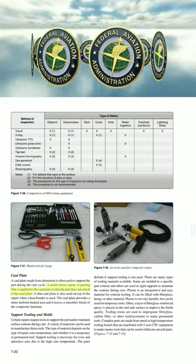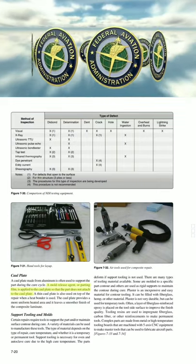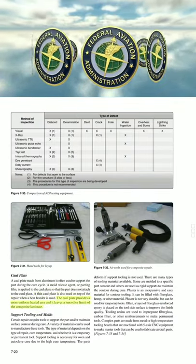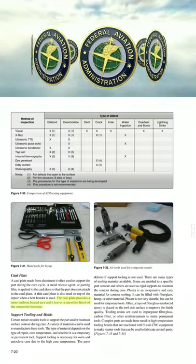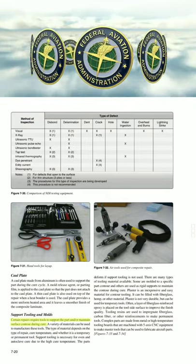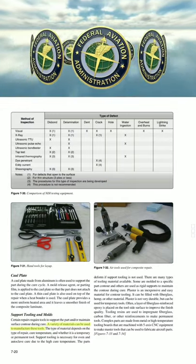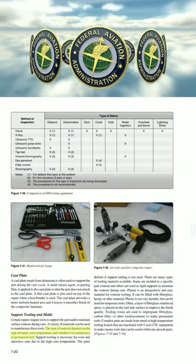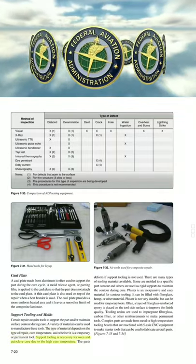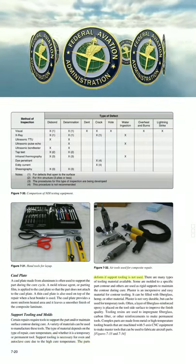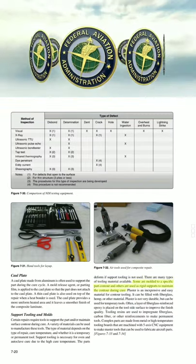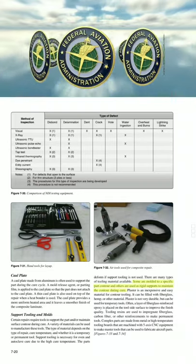A parting film is applied to the caul plate so that the part does not attach to the caul plate after curing. A thin caul plate is also used on top of the repair when a heat blanket is used, providing a more uniform heated area and leaving a smoother finish on the composite laminate. Support tooling and molds: certain repairs require tools to support the part and/or maintain surface contour during cure. The type of material for tooling depends on the type of repair, cure temperature, and whether it is a temporary or permanent tool. Support tooling is necessary for oven and autoclave cures due to high cure temperatures.